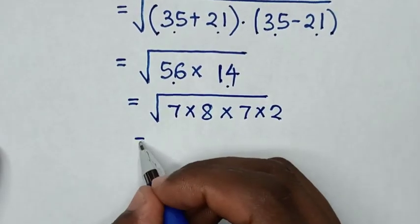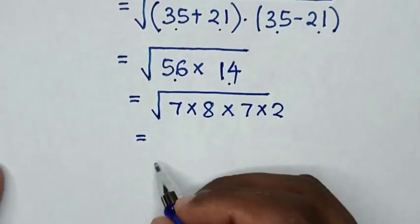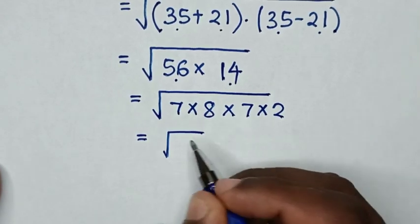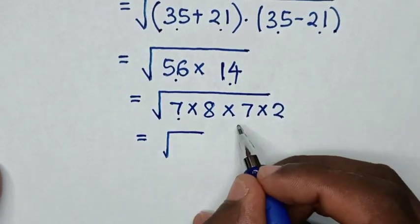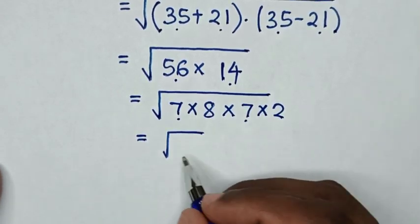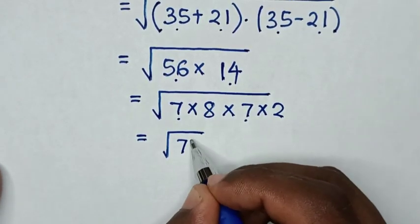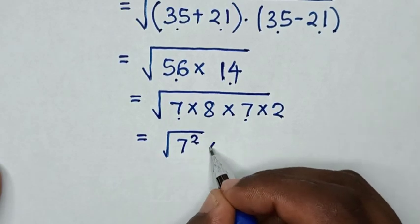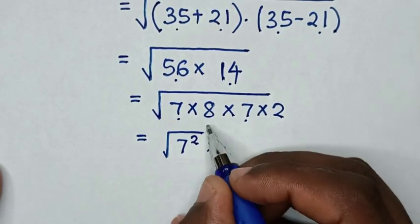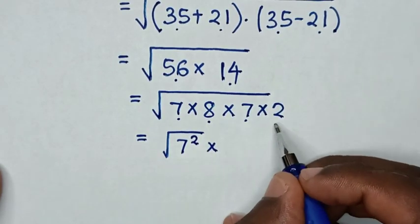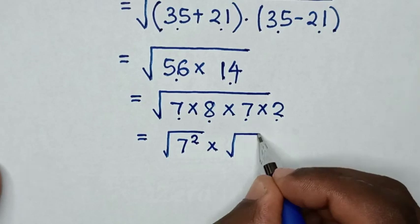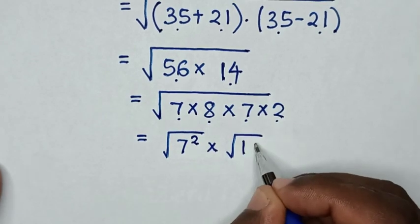Then it will be equal to square root of 7 times 7, which is 7 squared, then times square root of 8 times 2, which is square root of 16.